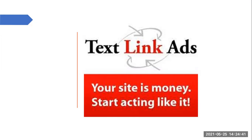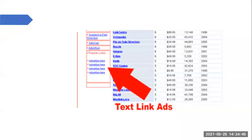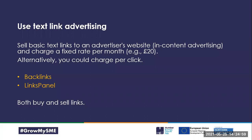Number three: text link ads. Very simple - just a straightforward text link ad, not dissimilar to banners. You sell links to an advertiser's website at a fixed fee or cost per click. You can use the likes of Backlinks and Links Panel to buy and sell links. You're trying to encourage continuous sustainable revenue by using text link advertising. Worth checking out Backlinks and Links Panel, much in the same way as the affiliate networks.